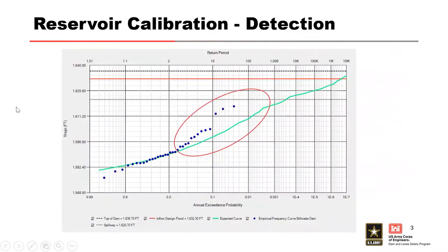Before running a full uncertainty simulation in RMCRFA — which can take around 20 minutes or longer — it's important to run a few preliminary calibration runs using the expected only option. The purpose of the calibration runs is to ensure that the simulated stage frequency curve fits well within the empirical stage frequency curve derived previously. If the simulated stage frequency curve plots well compared to the observed data, we will have more confidence in the estimated exceedance probabilities for much rarer floods, such as those that would cause overtopping.